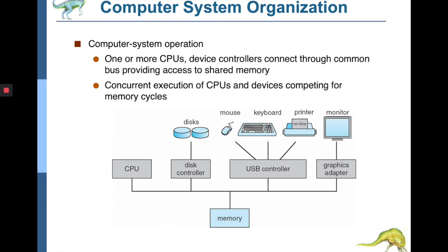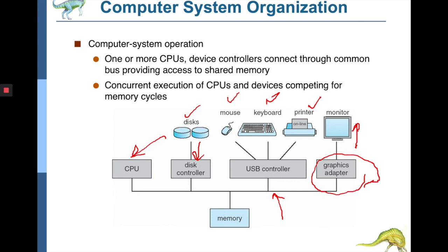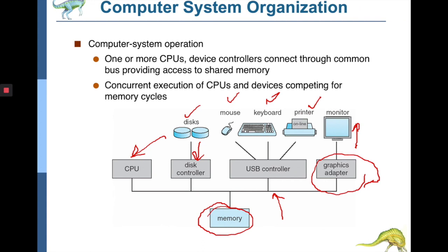Computer system organization can have one or more CPUs and devices connected through a common bus. A graphic adapter connects to the monitor; printer, keyboard, and mouse are also devices connected to the CPU through disk controllers, USB controllers, and graphic controllers. Each controller could be another microcontroller or microprocessor. These device controllers connect through a common bus providing access to shared memory, forming the interconnection between all devices which can access common memory to run and execute programs effectively.